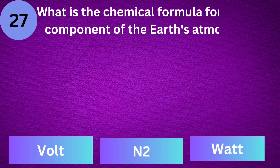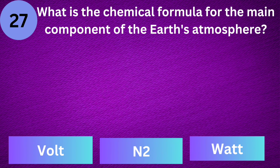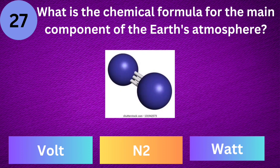What is the chemical formula for the main component of the Earth's atmosphere? N2.